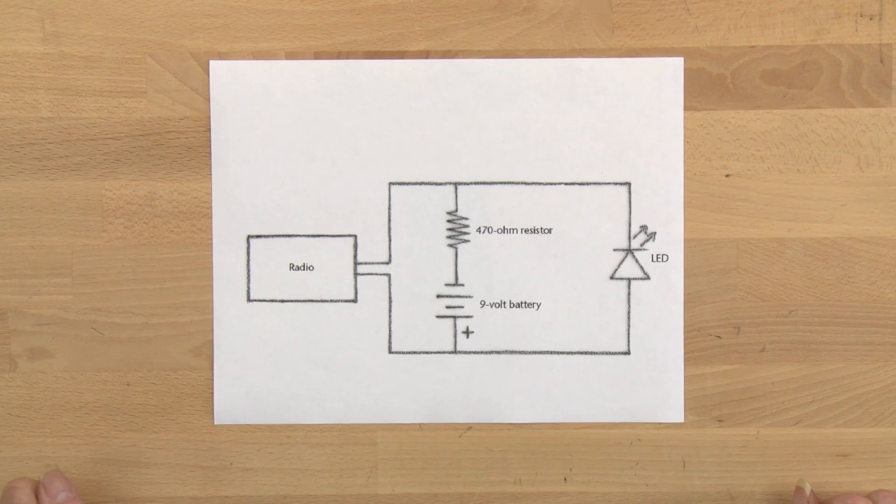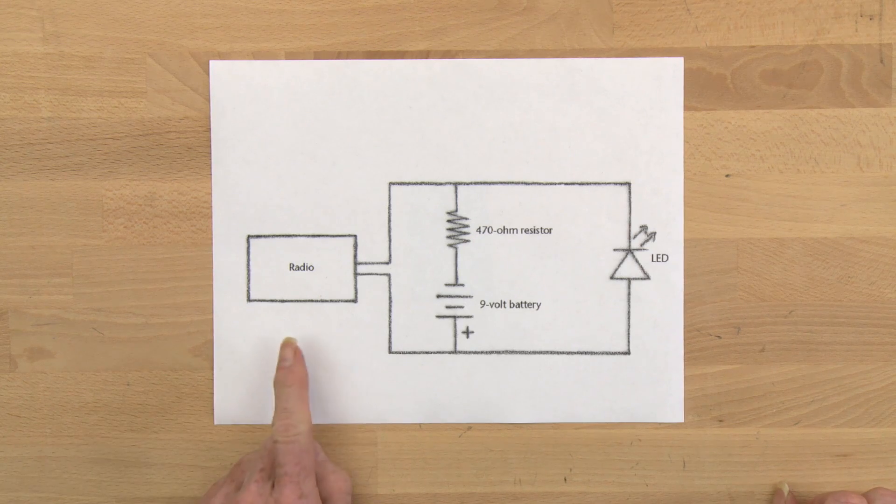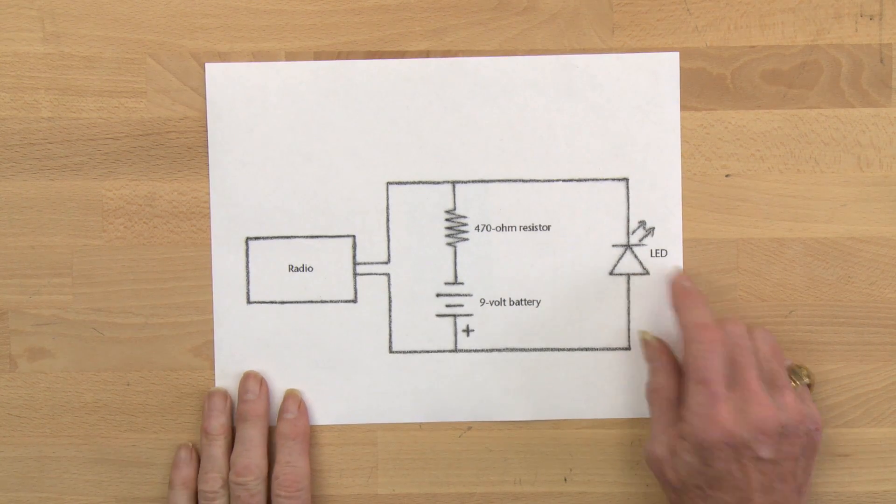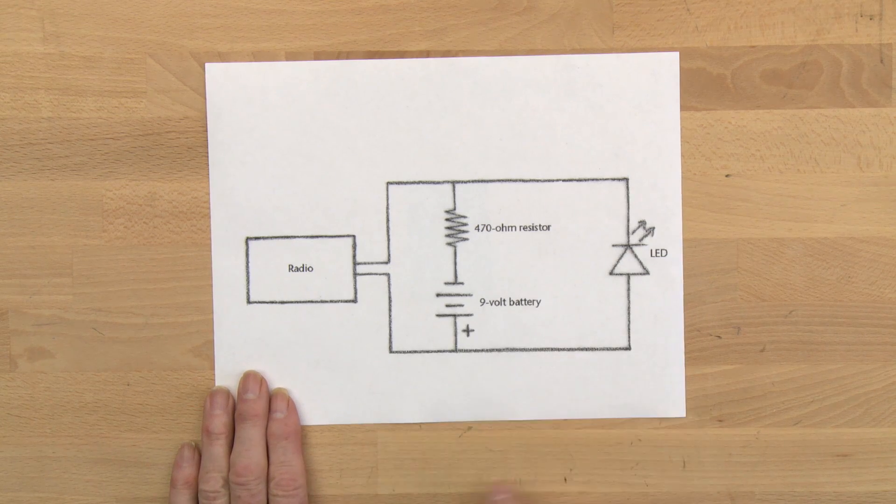Now we have to build our light transmitter. It's going to take the electrical signal from the radio and turn it into a time varying light signal. So here's the circuit diagram.